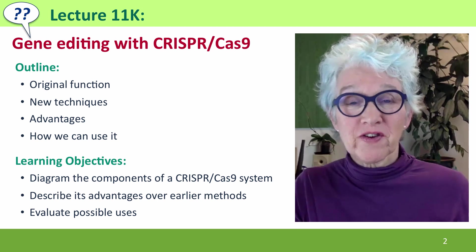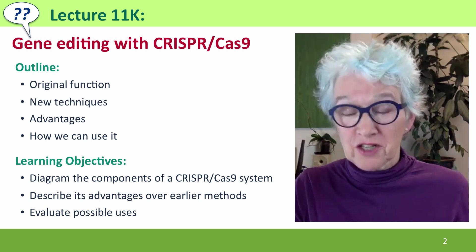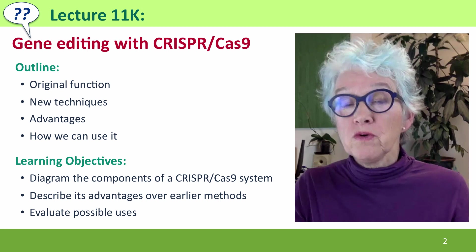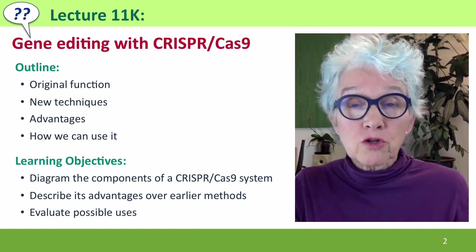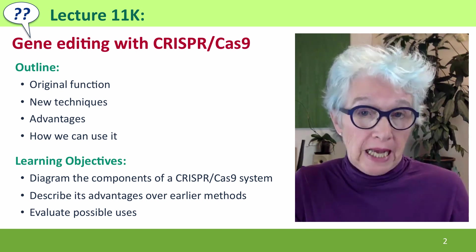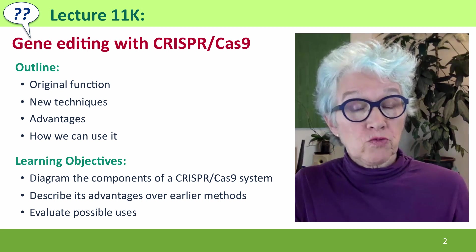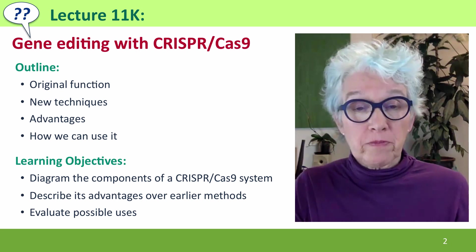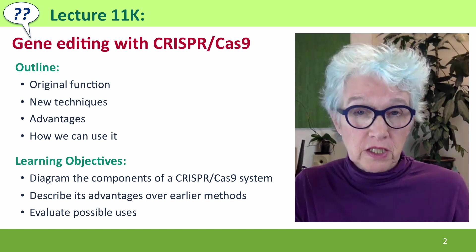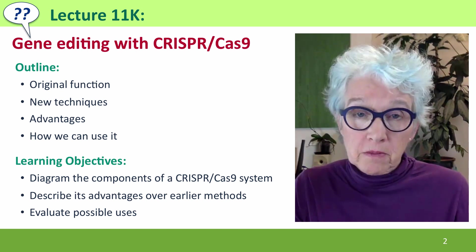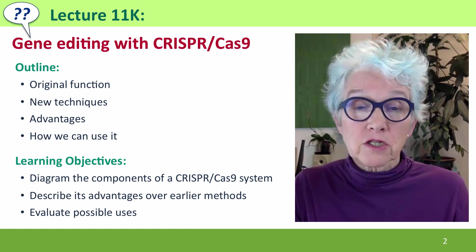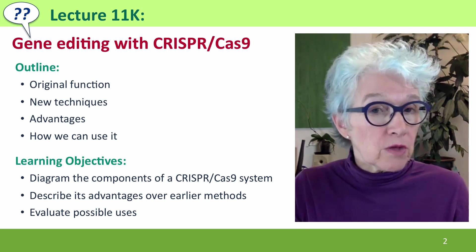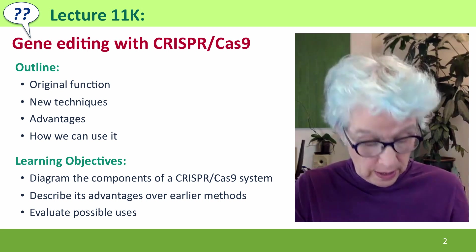Welcome back to the very last lecture of Useful Genetics. This is a special lecture about the new gene editing technique called CRISPR, or more formally CRISPR-Cas9. We'll talk about its original function in bacteria, how it's been modified by researchers to provide new techniques for gene editing in plants and animals, the advantages of this new technique, the ways we can use it, and some of the problems we still have in using it.